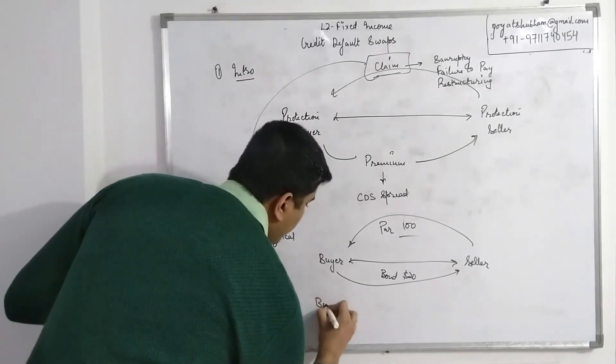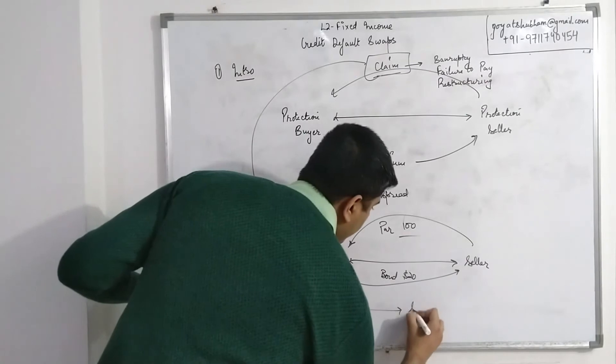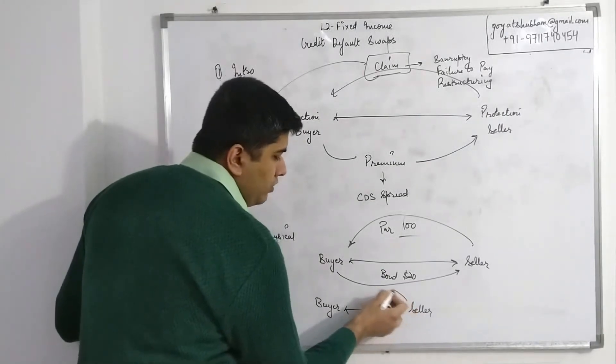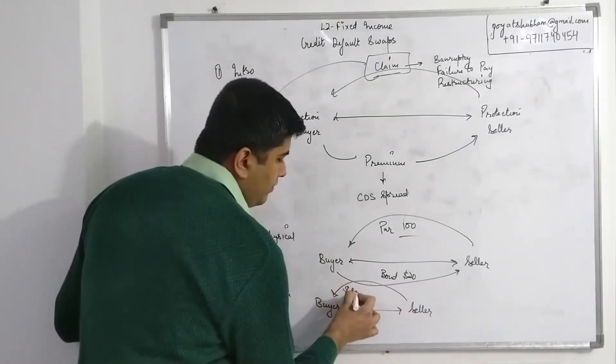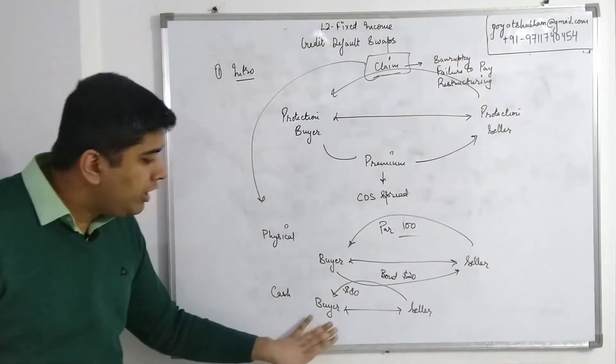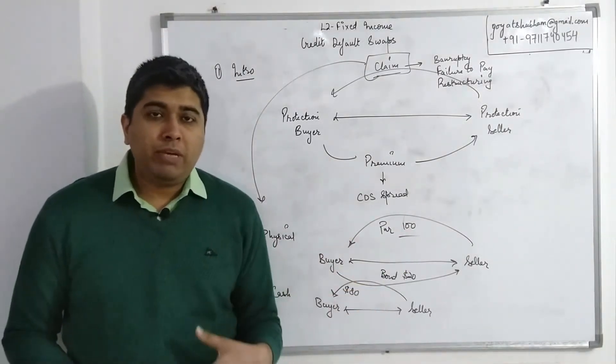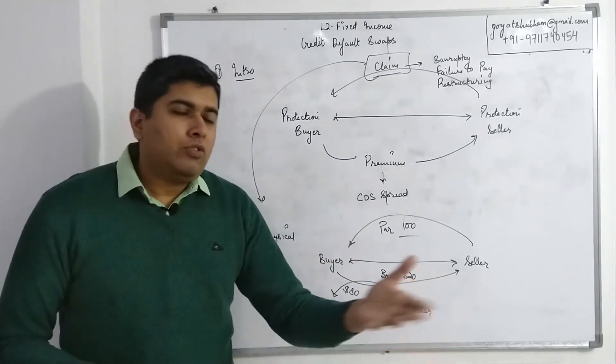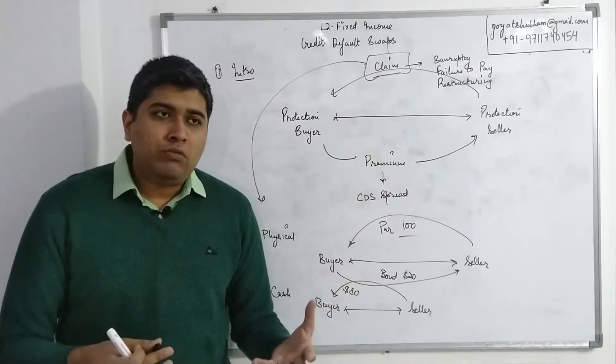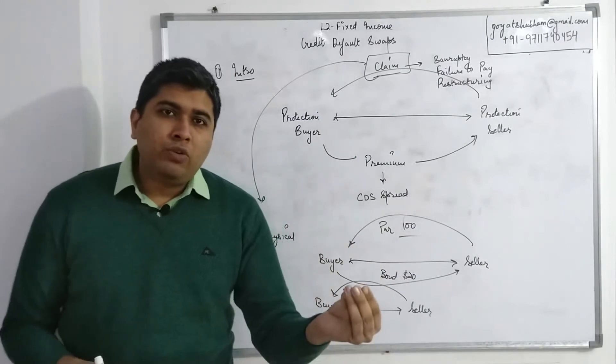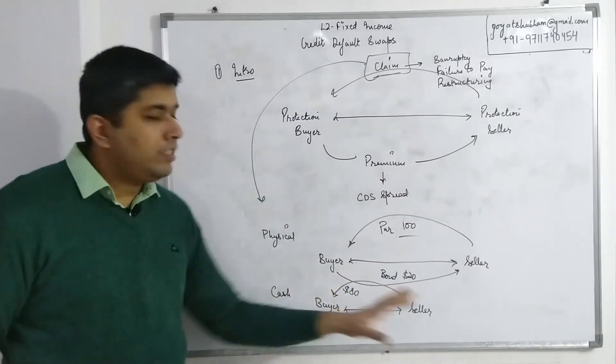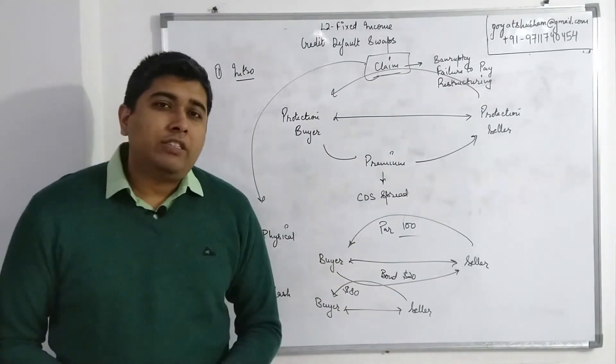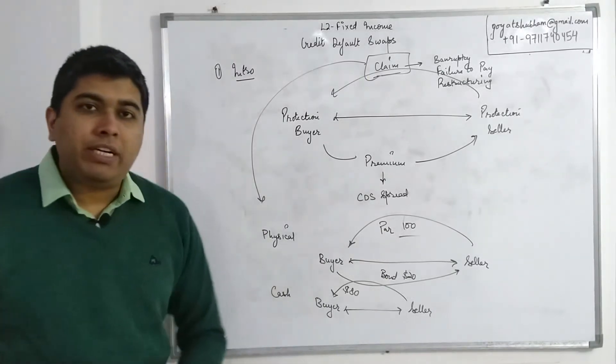Then you have cash settlement where again you have buyer and you have seller. But in this case, if the claim materializes, the seller will directly pay me just $80, the difference between the par and the $20, and I will continue to hold the bond which is worth $20 with me. Because effectively the seller is saying you already have a bond that you can sell in the market for $20, so effectively out of the $100 that you were exposed to, you haven't lost the $20—$20 is still there with you. Your loss is only $80. So in this case the seller is only covering your loss portion. You can have both sorts of cases. Most of the calculations for your exam purposes will focus on cash settlement.